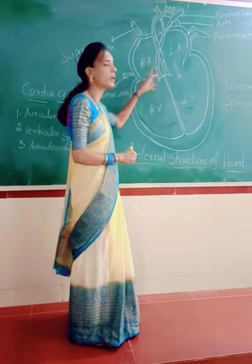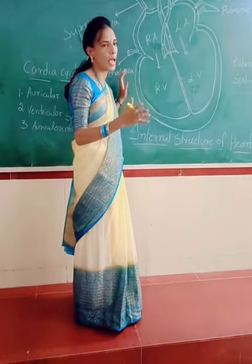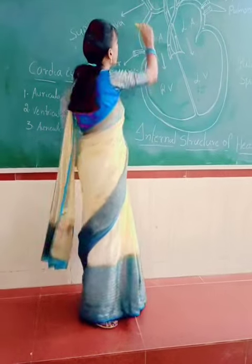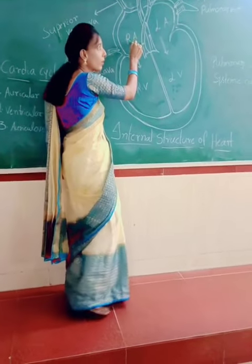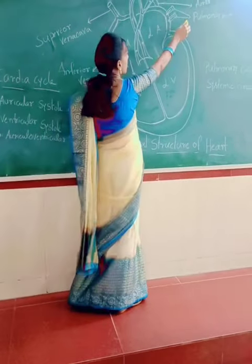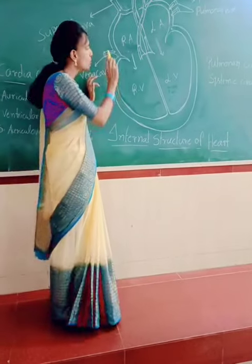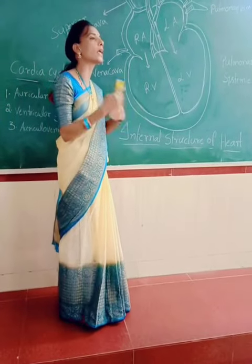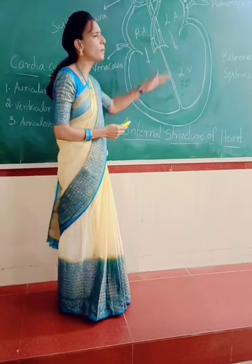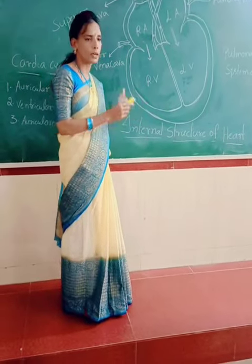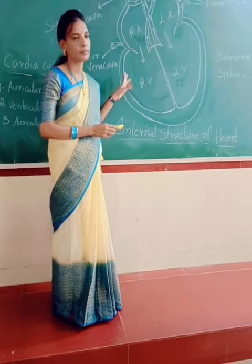The third stage is auriculoventricular diastole. In this stage, the two auricles and two ventricles will relax. Again, the blood will come from the vena cava to the right auricle, and from the pulmonary vein to the left auricle. This process will continue as it is a cyclic process. This is called the cardiac cycle.